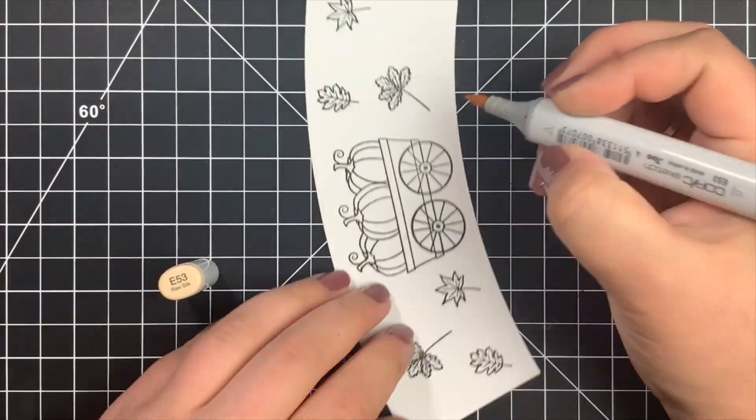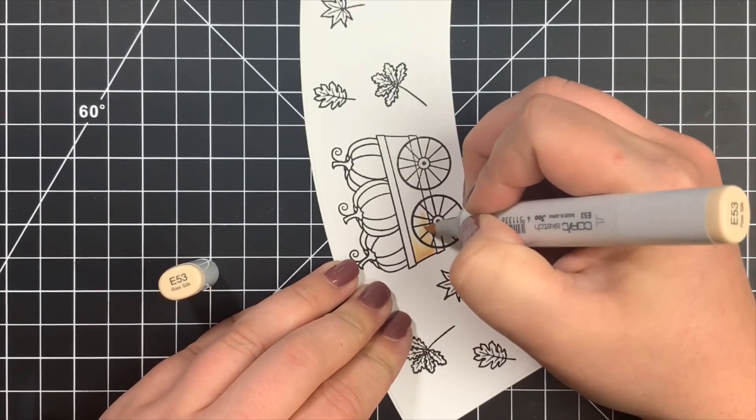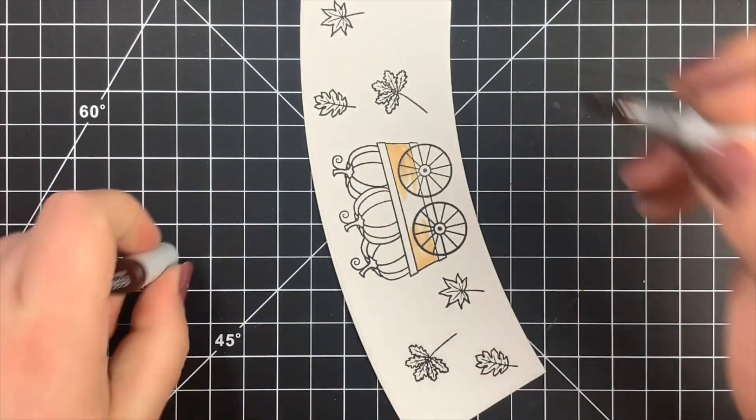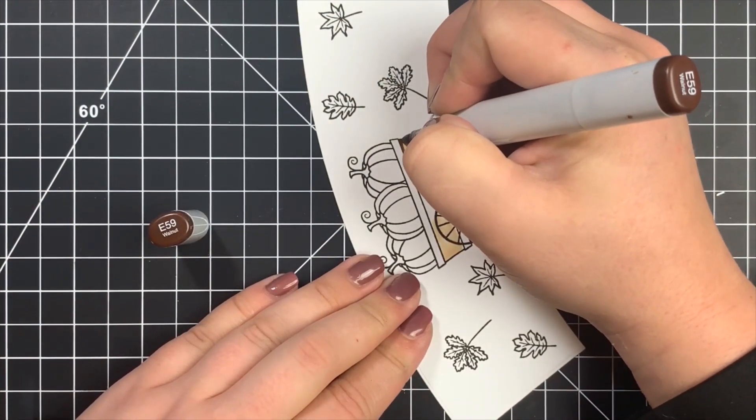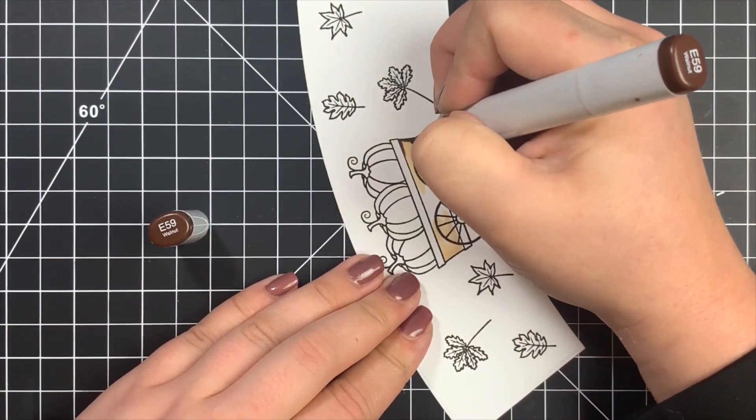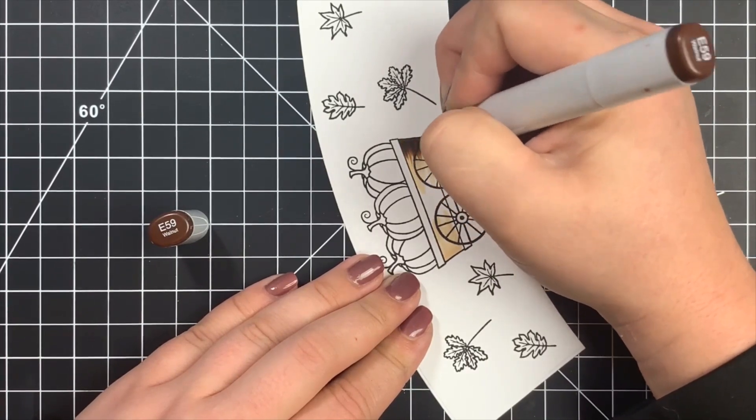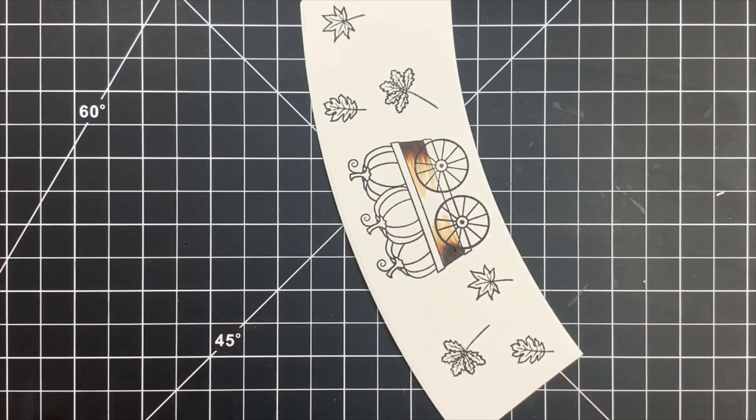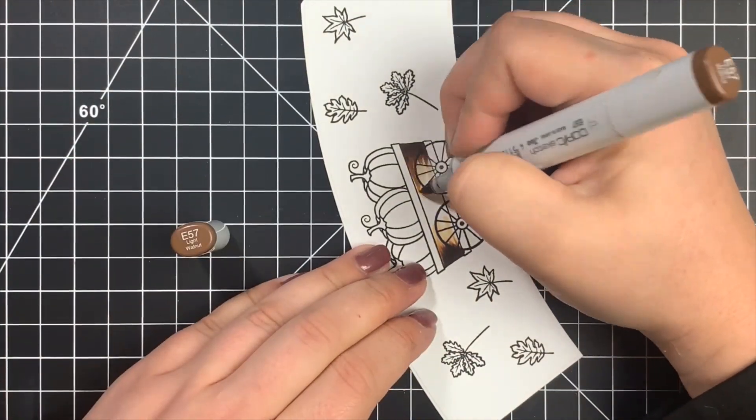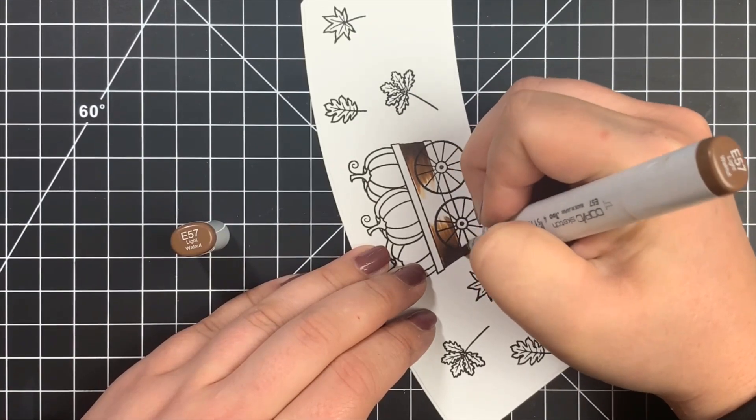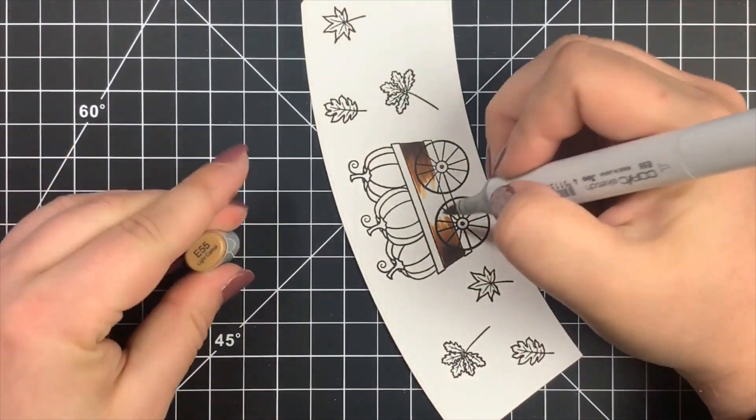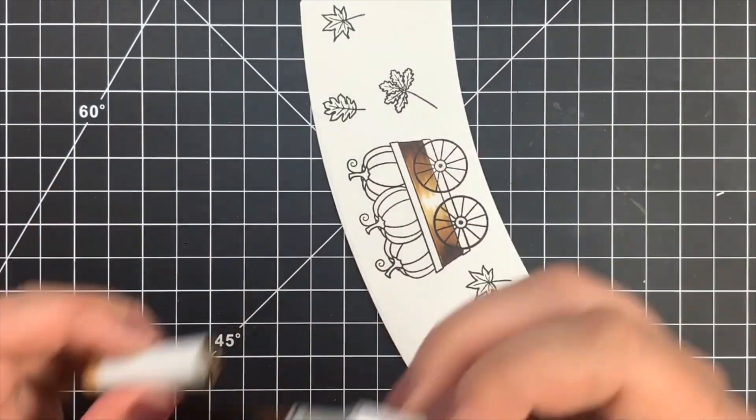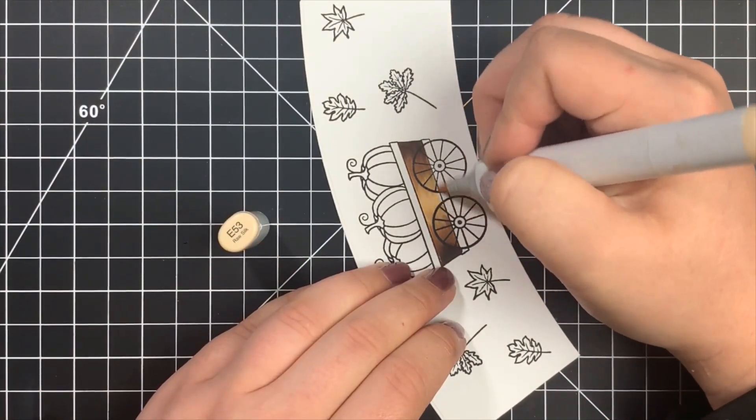So next we're going to move on to the Copic coloring here. I'm going to start off with some E50 markers for part of this wagon here. I saturated the paper with my lightest color on either side, just keeping a center highlight because that's the easiest for something like this. Added a little bit of that E59 on either side, flicked that color out with the E57, then the E55, then bringing back in that E53 for just that highlight color right there in the center.